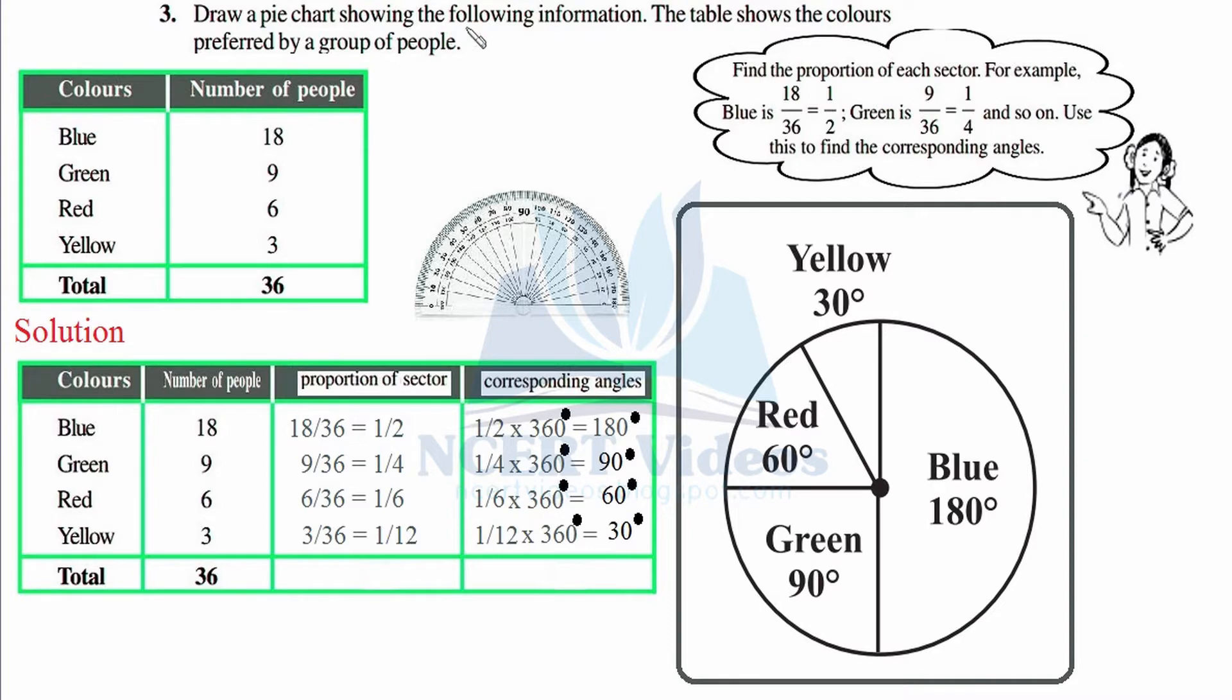Question number three: Draw a pie chart showing the following information. The table shows the colors preferred by a group of people. A survey was conducted in such type of questions to find the interests of a group of people.